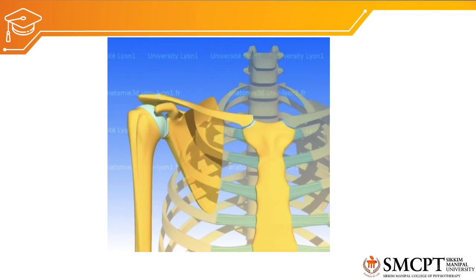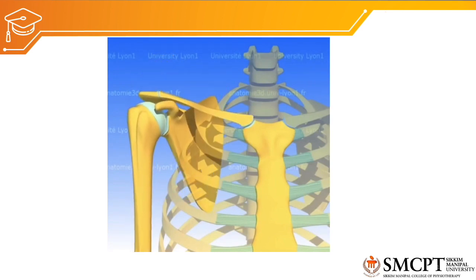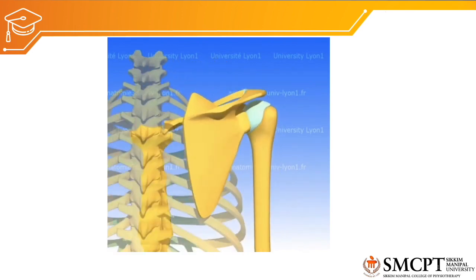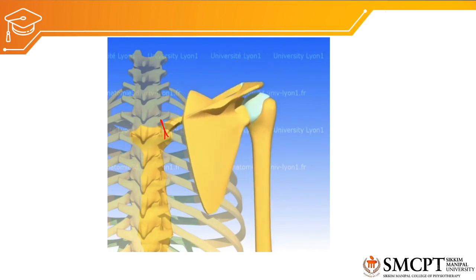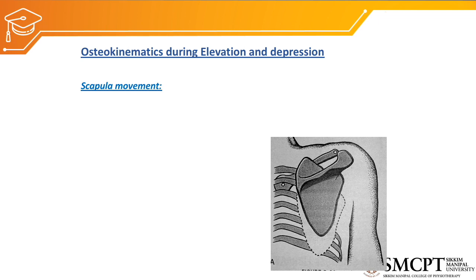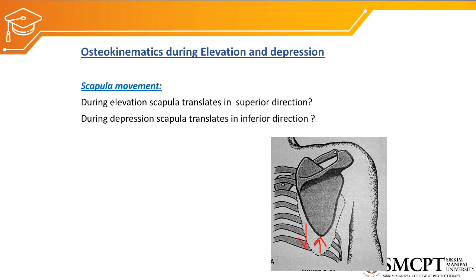Let's view this video demonstration to see how the units move. For creating elevation and depression, you can see the sternoclavicular joint and the acromioclavicular joint both have to move to create elevation of the clavicle and scapula. There is movement occurring at the sternoclavicular joint and at the acromioclavicular joint producing elevation and depression. During elevation the scapula translates in the superior direction, and during depression the scapula translates inferiorly.